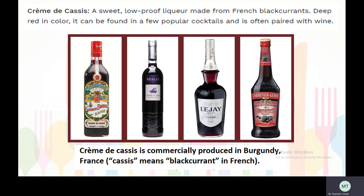Crème de cassis is a sweet, low-proof liqueur made from French blackcurrants. Deep red in colour, it can be found in a few popular cocktails and is often paired with wine. Crème de cassis is commercially produced in Burgundy, France. Cassis means blackcurrant in French.